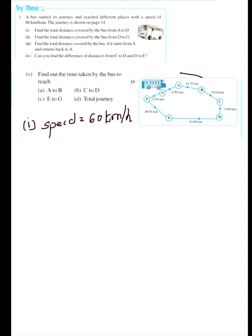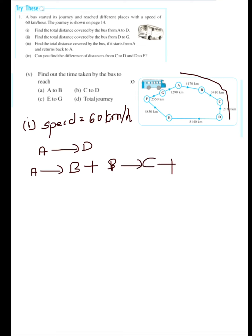A to D means the total distance covered by the bus from A to B, plus B to C, plus C to D. This will be the total distance covered by the bus from A to D. All these distances you have to add. So let's see what the distance from A to B is.